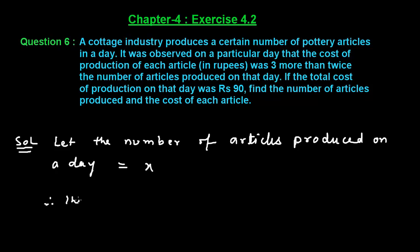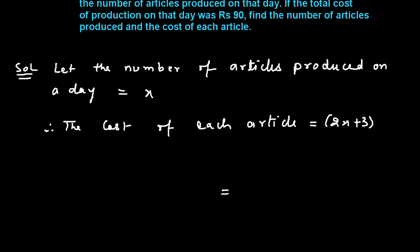Therefore, the cost of each article is equals to 2x plus 3. And we are given that the total cost on that day was rupees 90.